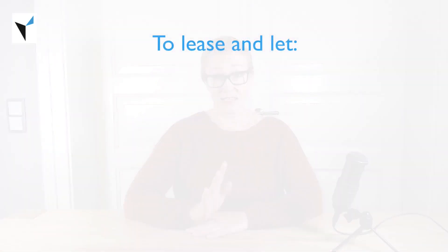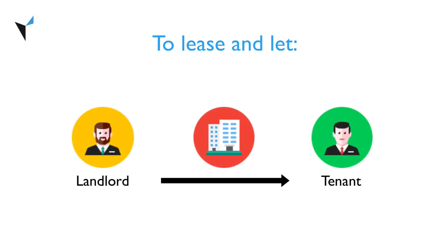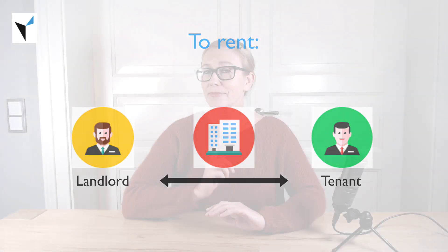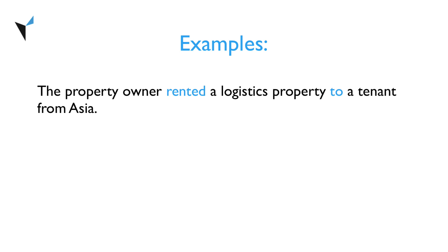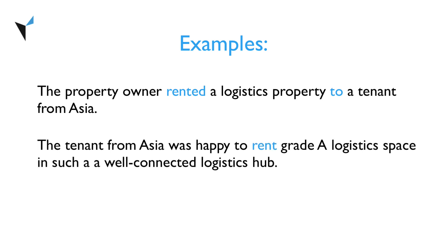Let's move on and add the verb to rent to the mix. While the verbs to lease and to let refer to a situation in which a landlord leases space to a tenant, the verb to rent is more versatile and can go in both directions. Let's have a look at some examples. The property owner rented a logistics property to a tenant from Asia. The tenant from Asia was happy to rent grade A logistics space in such a well-connected logistics hub. As you can see, when we use to rent with the preposition to, it has the same meaning as to lease and to let. But a tenant can also use the verb to rent to indicate that they've rented space from a landlord. Both directions are possible.